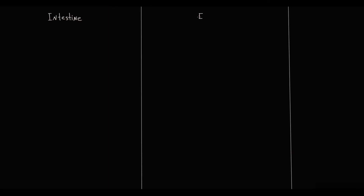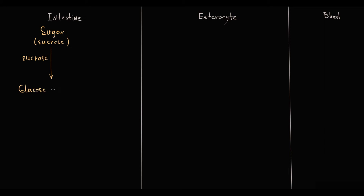We get fructose mainly from table sugar — sucrose — and when sucrose enters the intestine it is degraded by sucrase to glucose and fructose. We can also get pure fructose from fruits and honey, and fructose is the only monosaccharide that we consume in a free form.